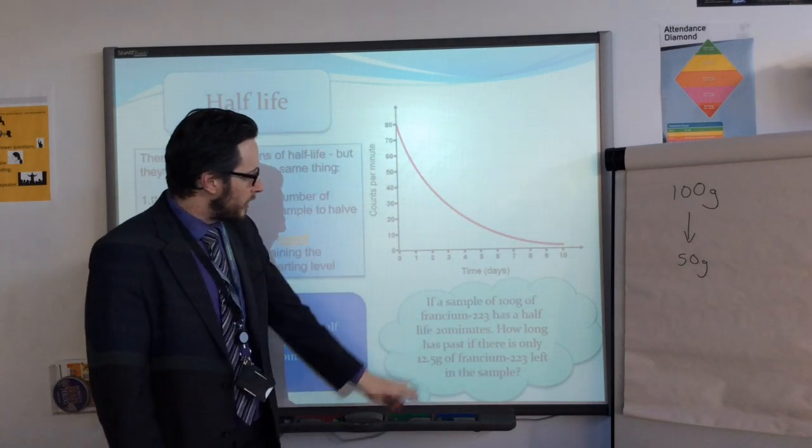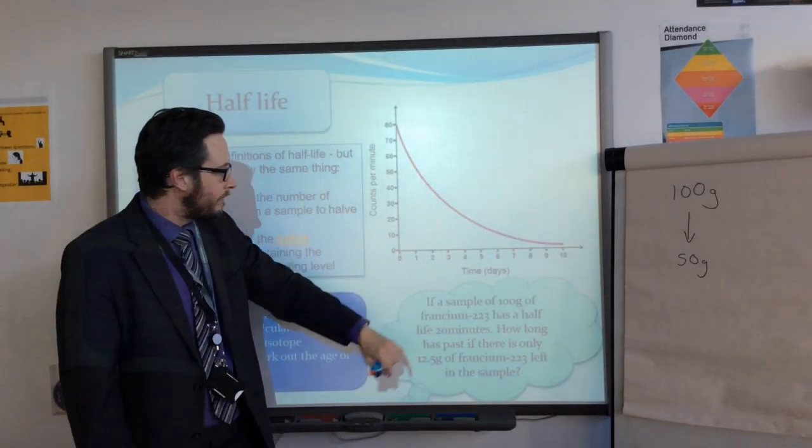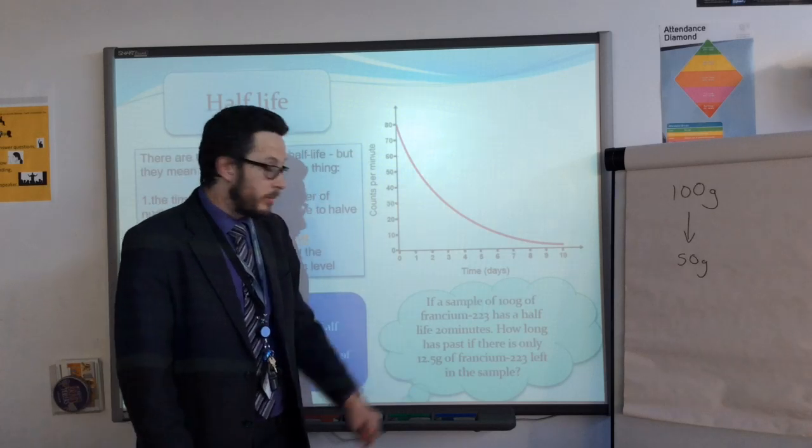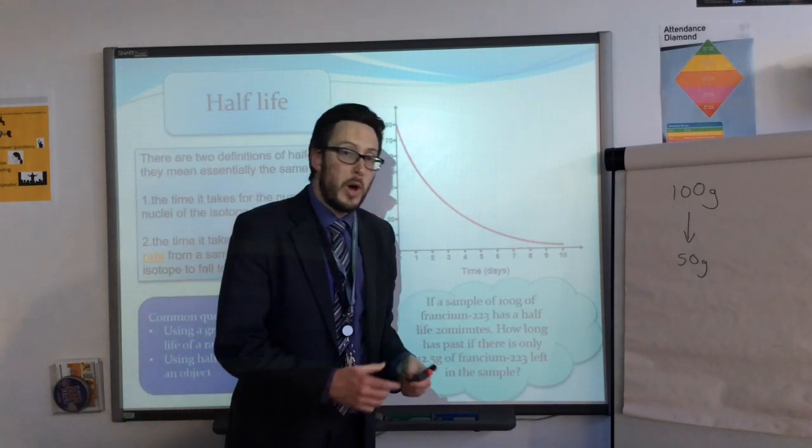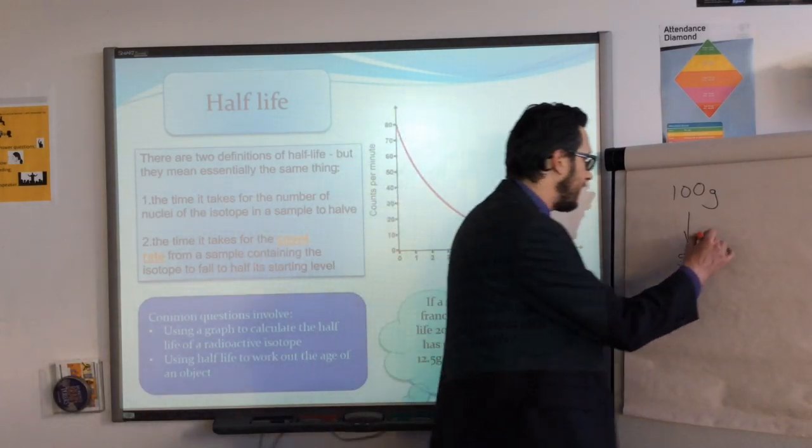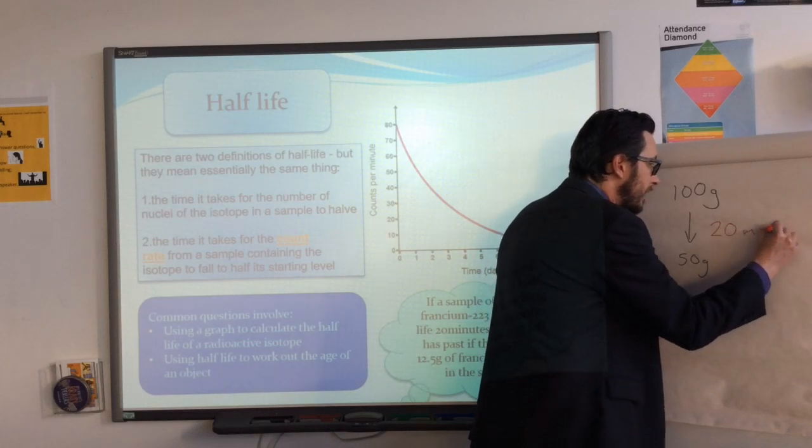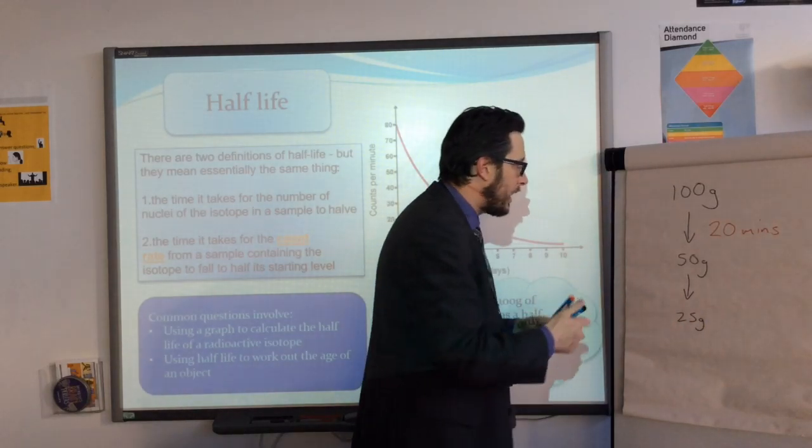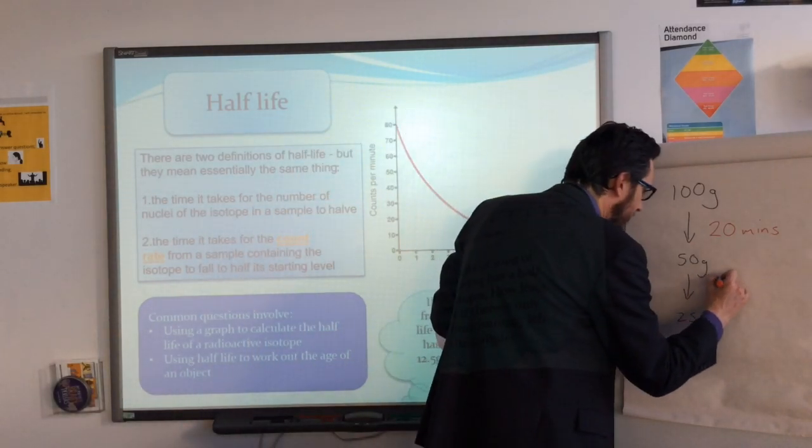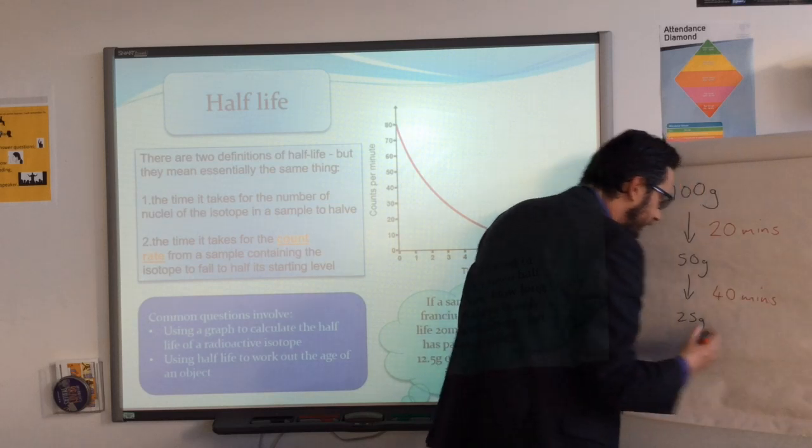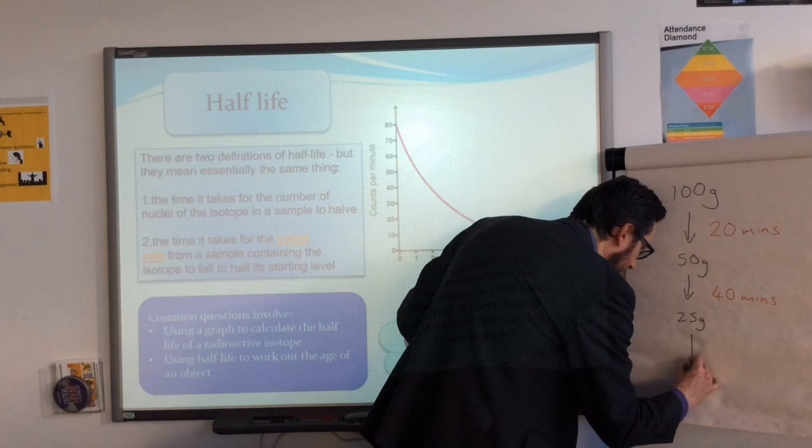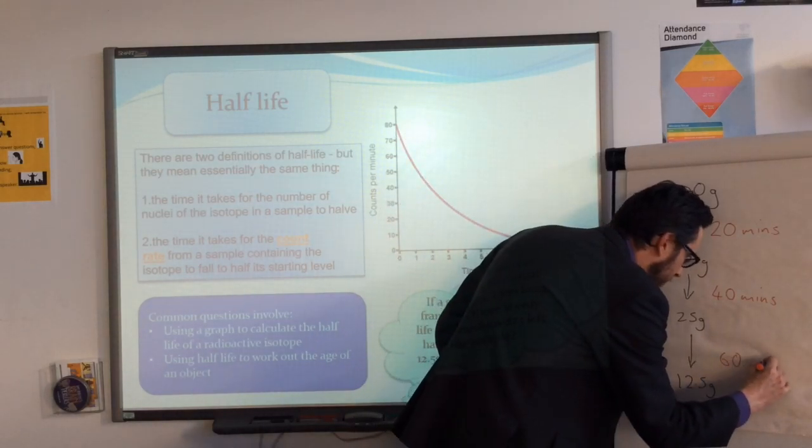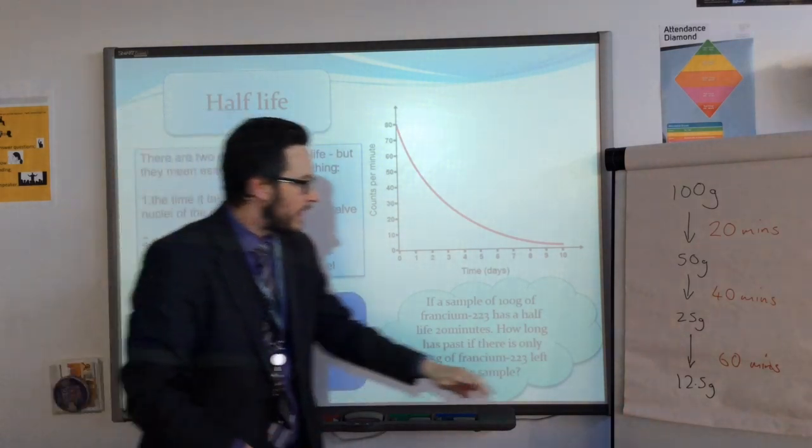With the numbers, so we're talking about this question where there's a sample of 100 grams of francium-223, and the half-life is 20 minutes. If we need to work out how much time has passed where the amount of francium has dropped to 12.5 grams, we look at one half-life. One half-life takes us down from 100 to 50. So that's 20 minutes has passed for that decay to happen. But then it drops by another half. Now that means it goes down to 25 grams. Now the second half-life has passed. So I'm going to add the time up. We add another 20, and we've gone to 40 minutes has passed.